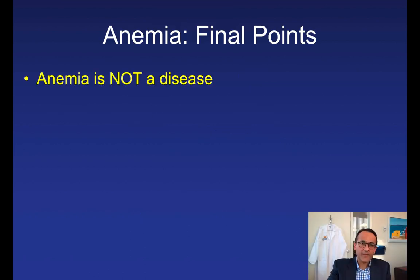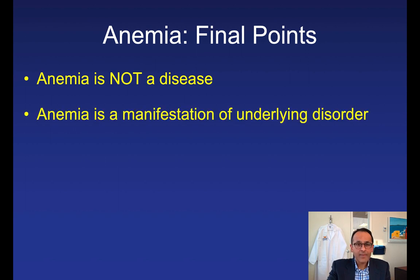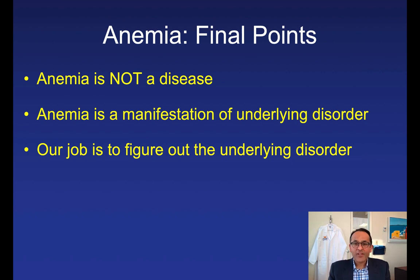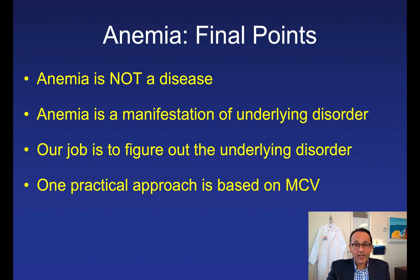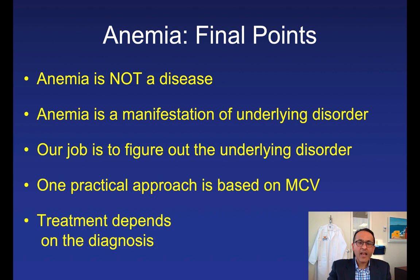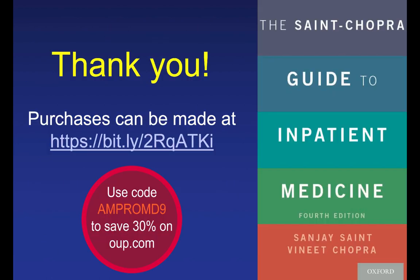Some final points: anemia is not a disease — it's a clinical manifestation of an underlying disease. Our job is to figure out what that underlying disorder is, using the MCV to guide us through microcytic, macrocytic, and normocytic anemia. Treatment depends on the underlying diagnosis. Thank you for listening. If you liked this, please feel free to purchase the Saint Chopra Guide using the promotion code on your screen. Have a good day.